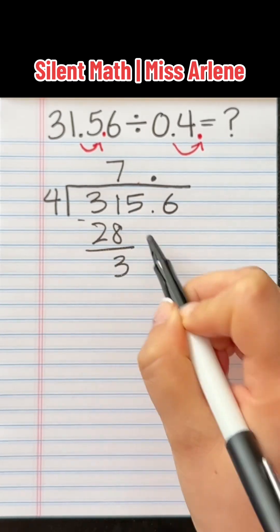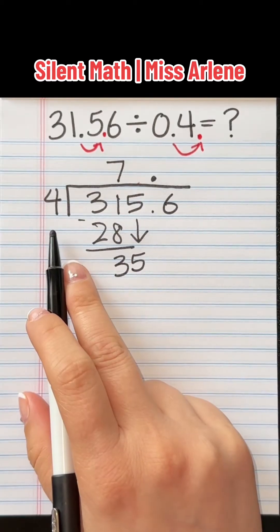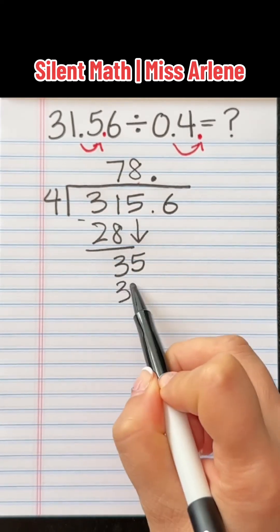You're going to subtract. You're going to bring down the next digit. You're going to repeat the process. How many groups of 4 can go into 35? Only 8 groups of 4. 8 groups of 4 is 32.